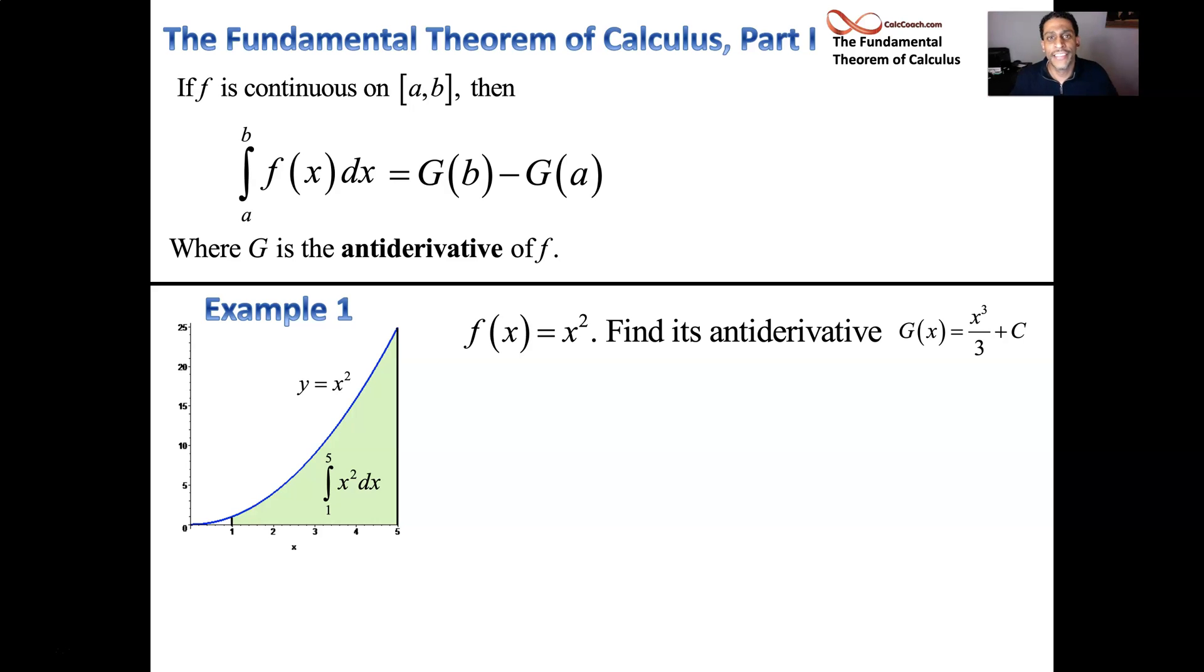Technically, there's a plus c there. And according to the fundamental theorem of calculus part one, we plug a five into that, and then we get a result. We plug a one into that, and we subtract that result from the antiderivative evaluated at five. So you plug a five in, you get 125 over three plus c. You plug a one in, you get one over three plus c.